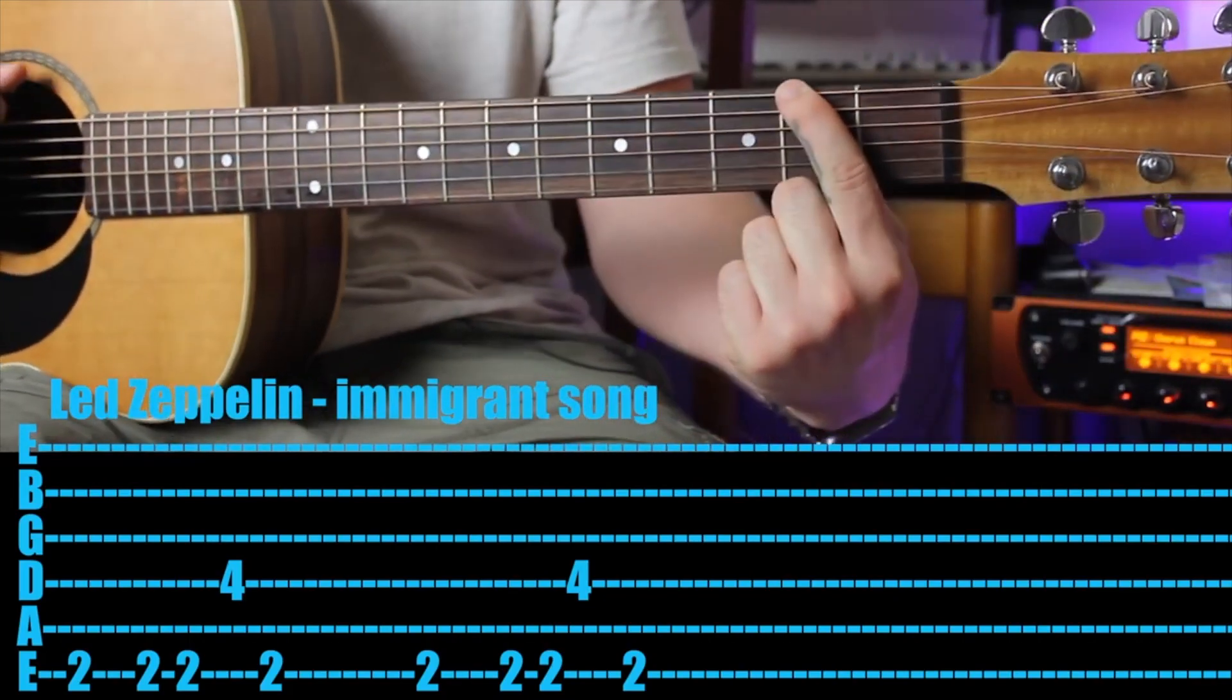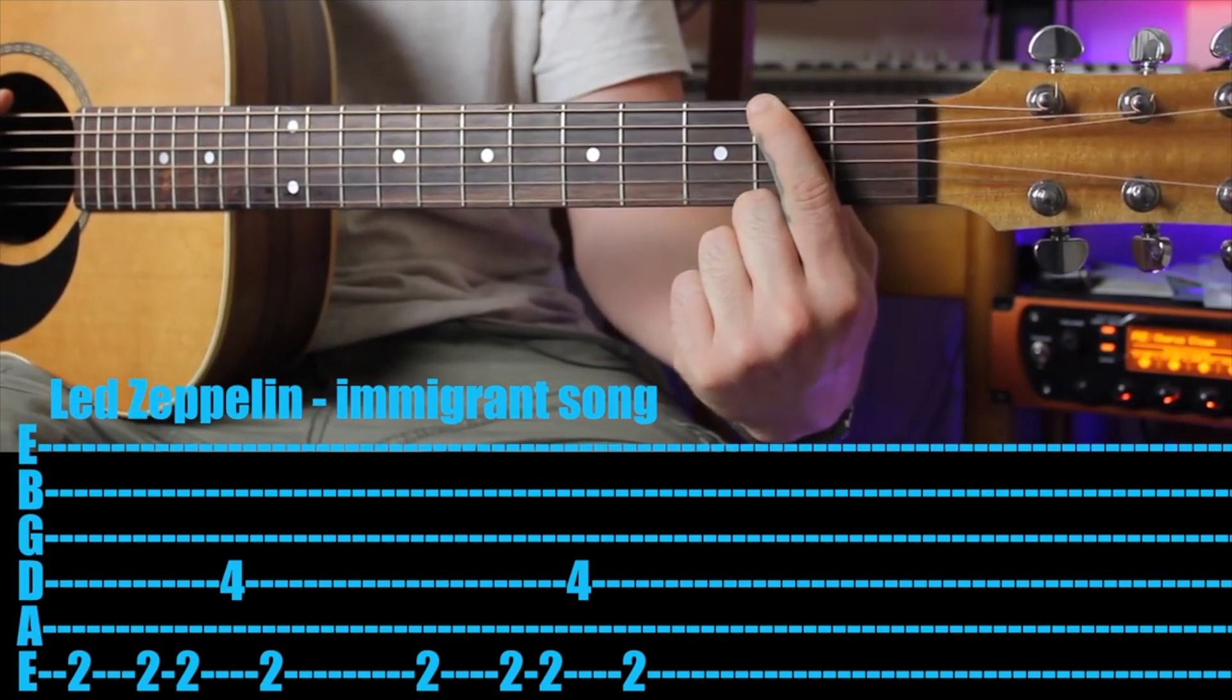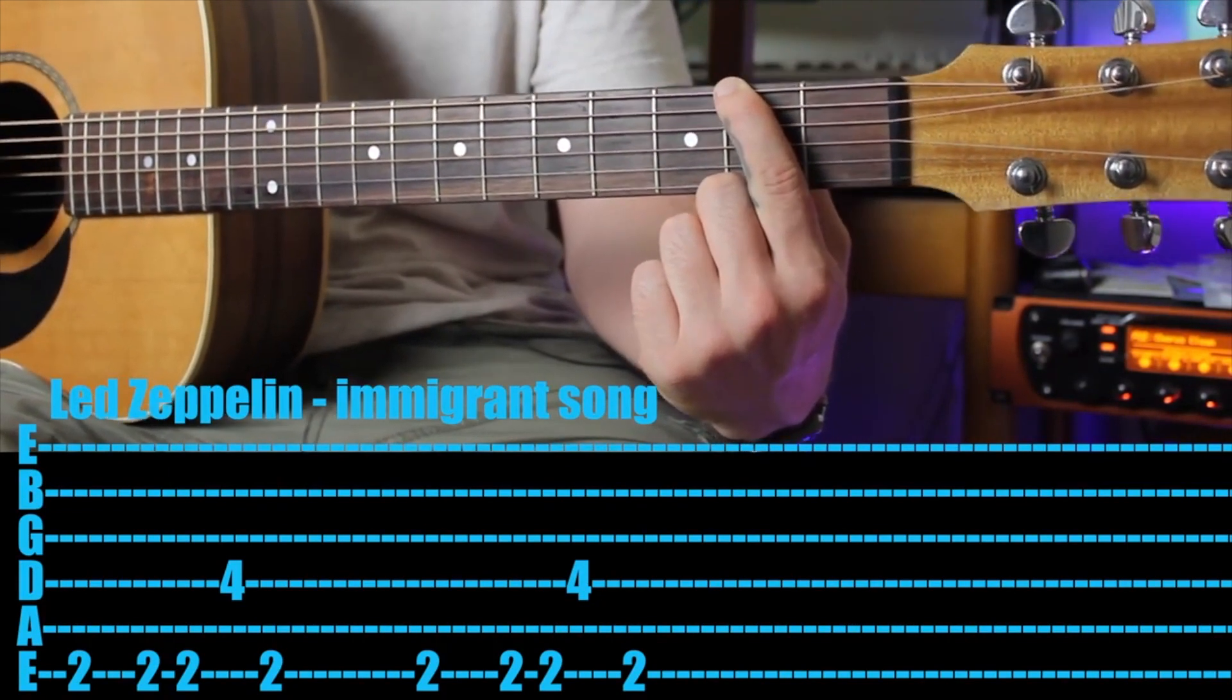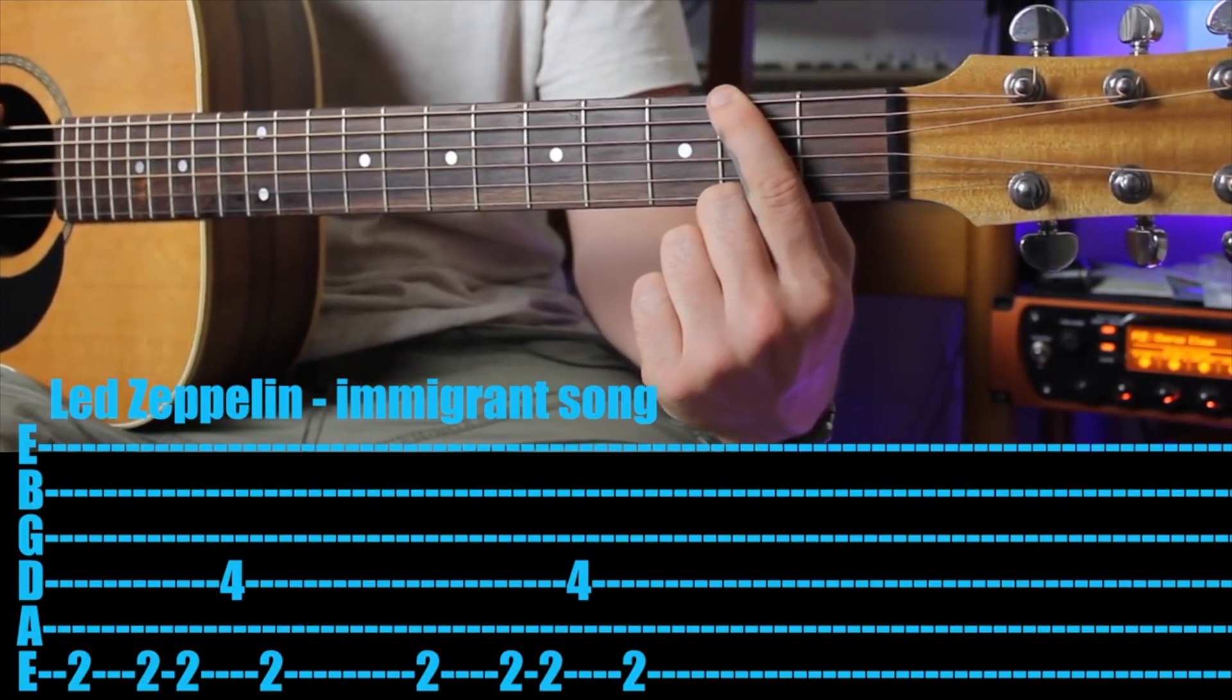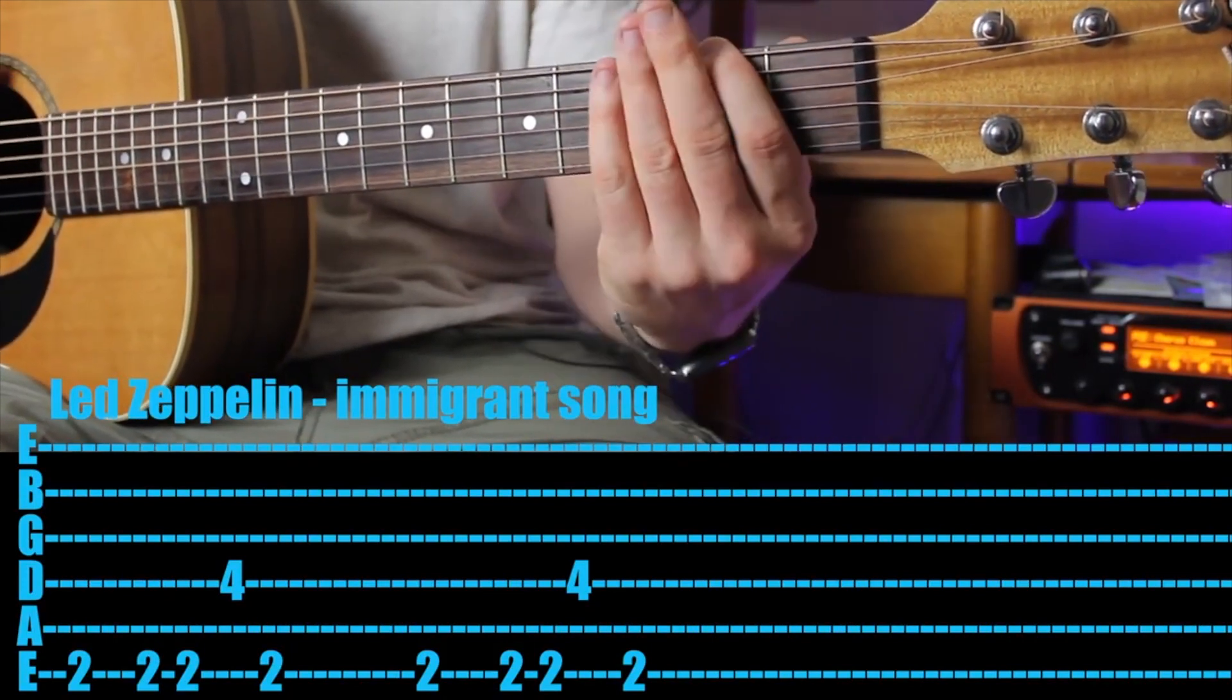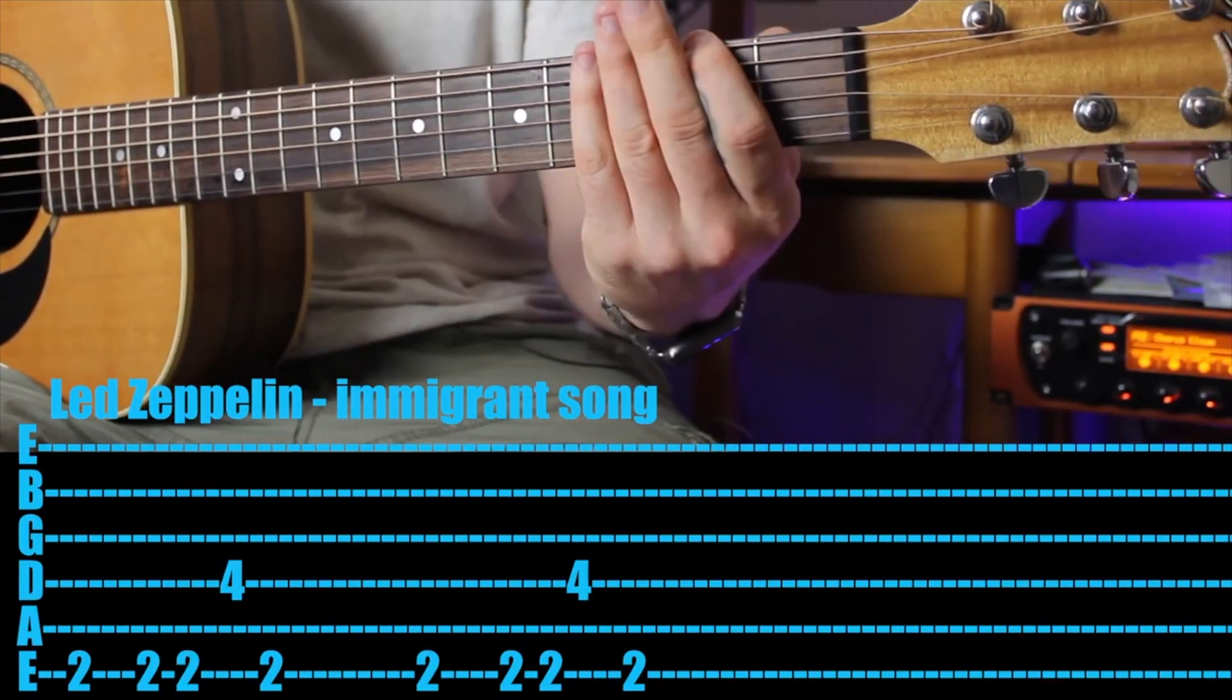So starting out with the one finger, you're coming in on the second fret of the six string. You're going to play that once, then you're going to play it another two times, but very quickly. So let's play it once, then two times quickly. Okay, so once, then quickly.